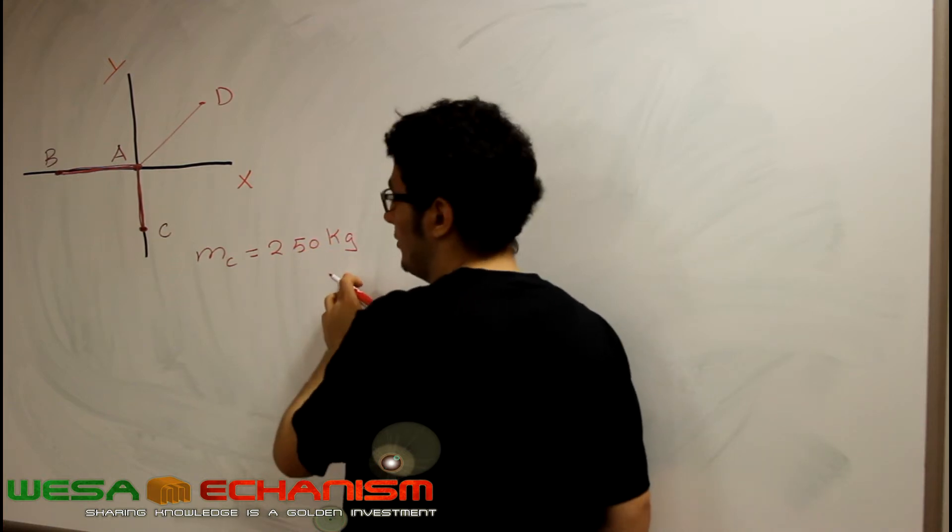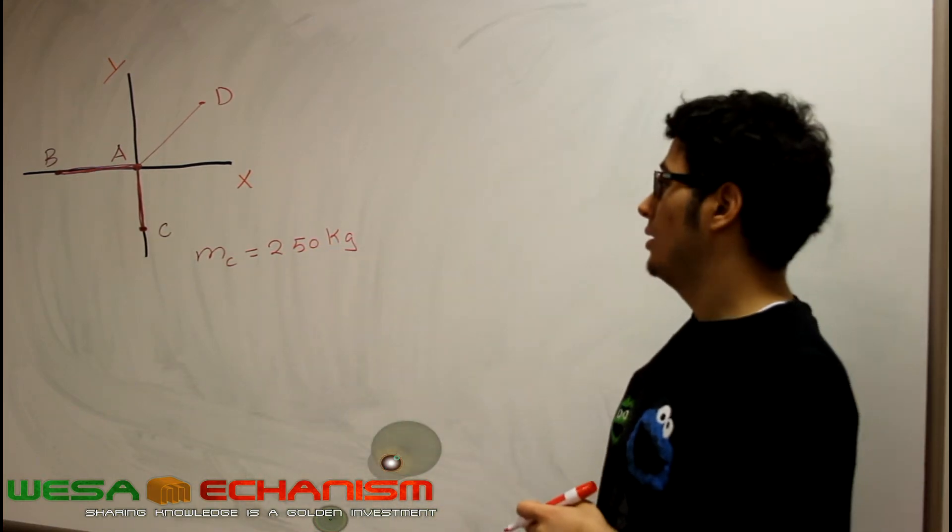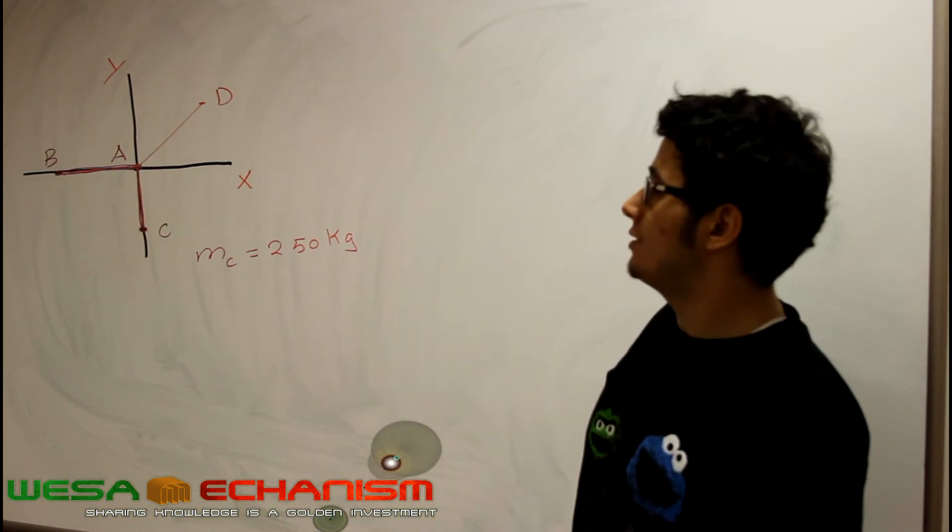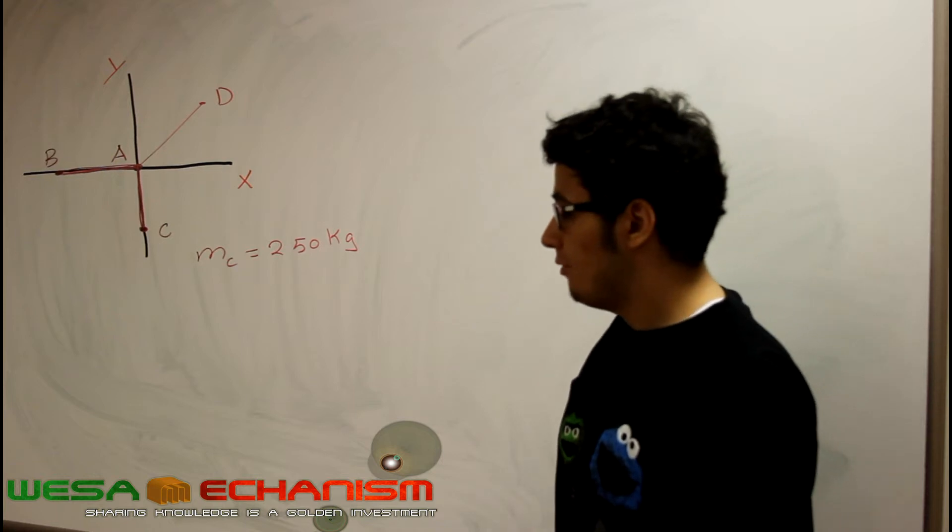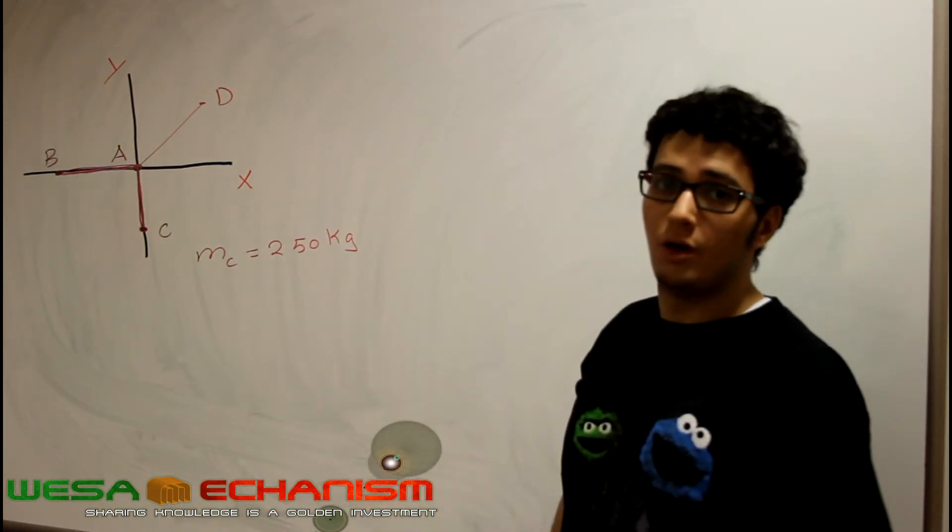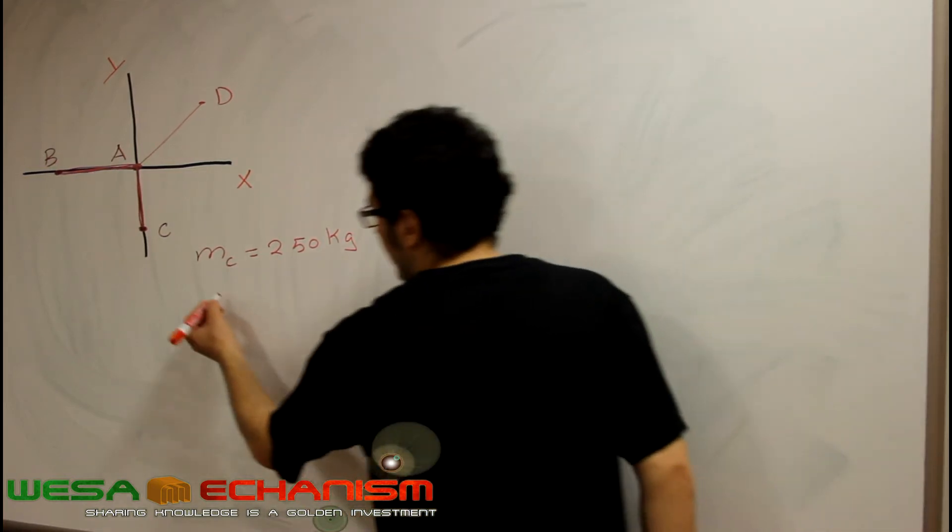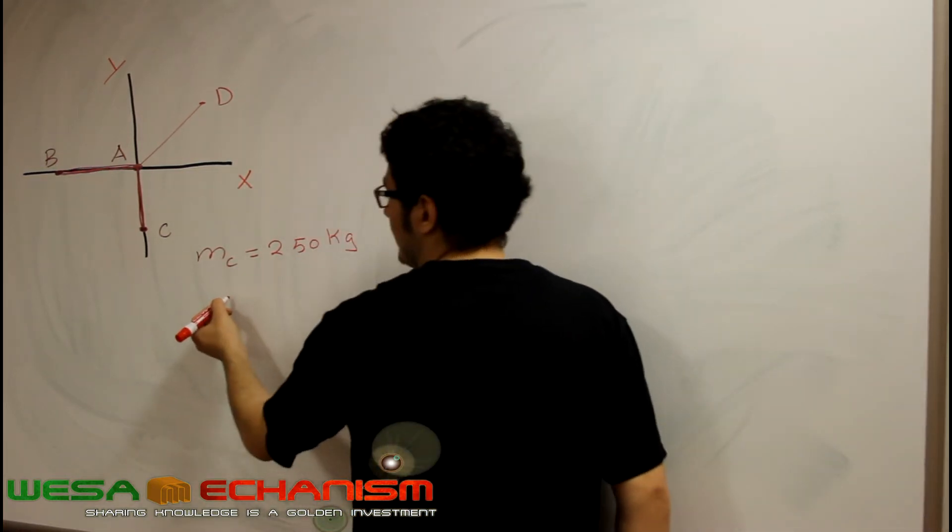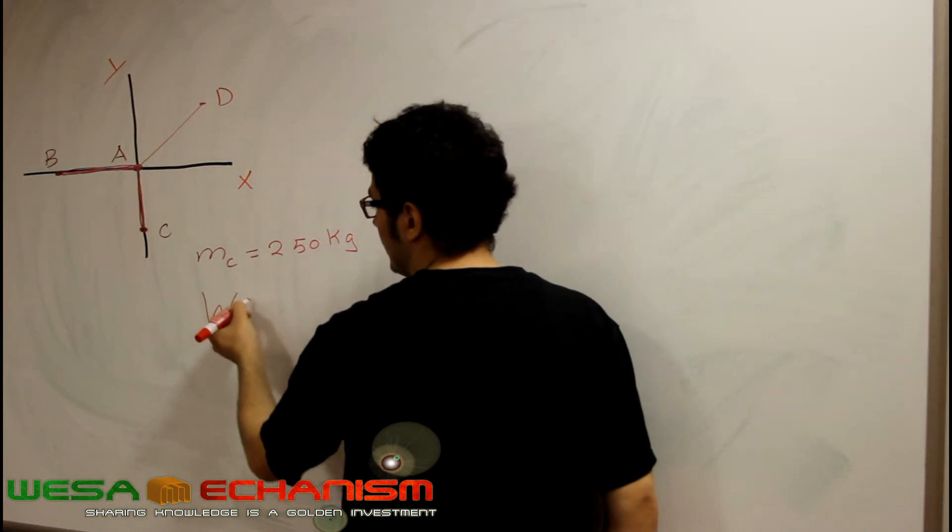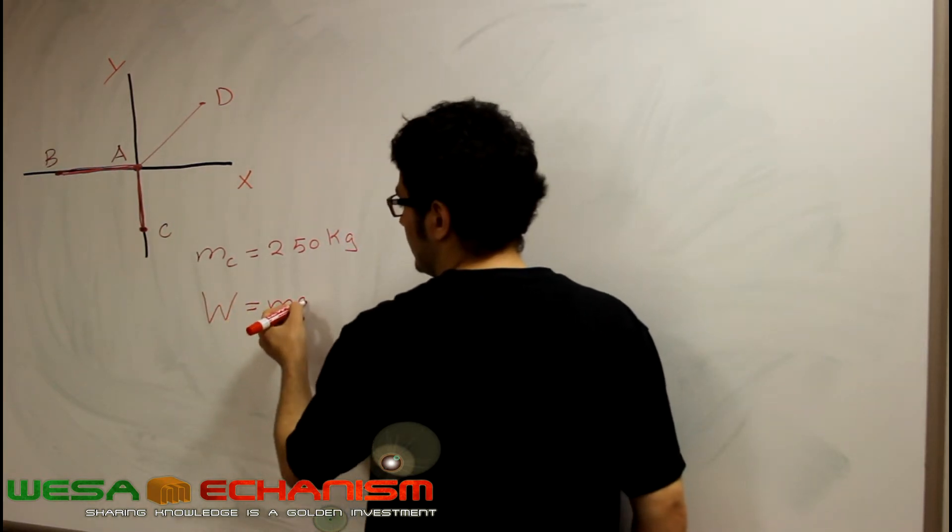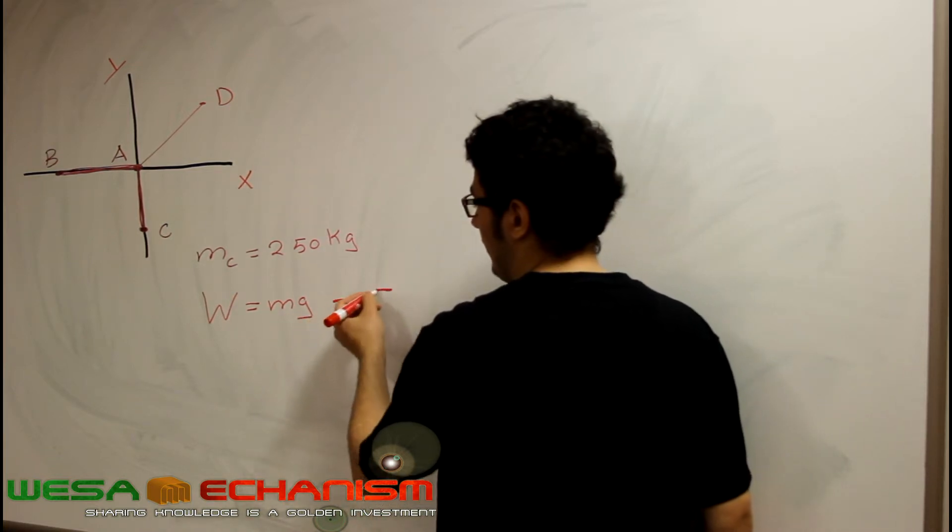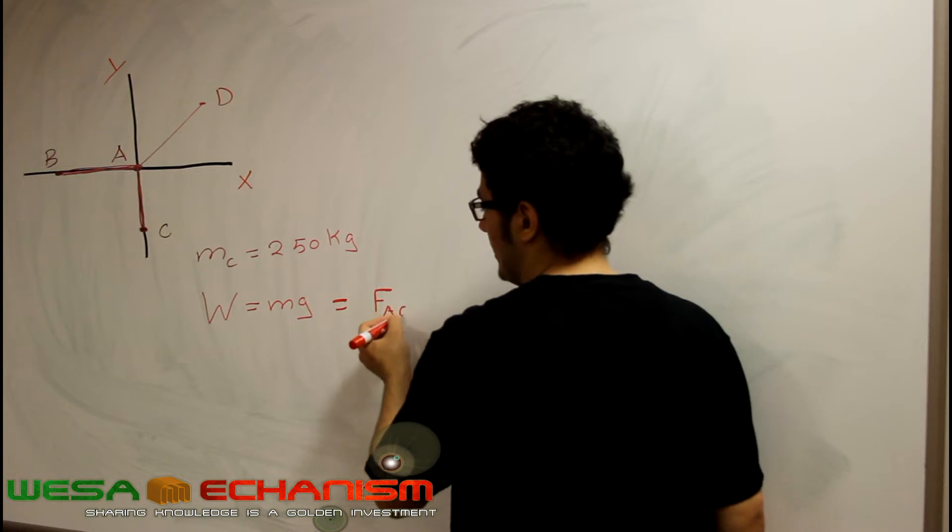Which means we are going to be using the SI units in this problem since this is kg. So the very easy thing that we can do at the moment is we are going to find the tension of the rope AC. We are going to say tension of the rope C, which is going to be W equal to MG, which is equal to FAC.